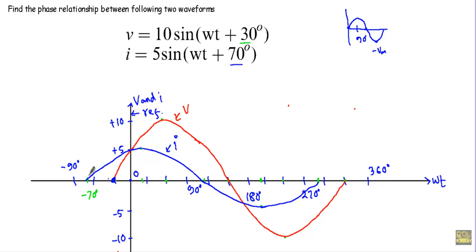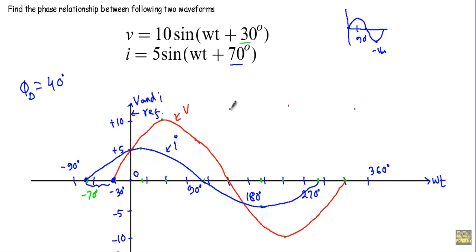Looking at the origins: the origin of the voltage is at -30 degrees, and the origin of the current is at -70 degrees. The phase difference is the angular distance between the origins of the two waveforms, which is 40 degrees. Therefore, I can say that I leads V by 40 degrees.